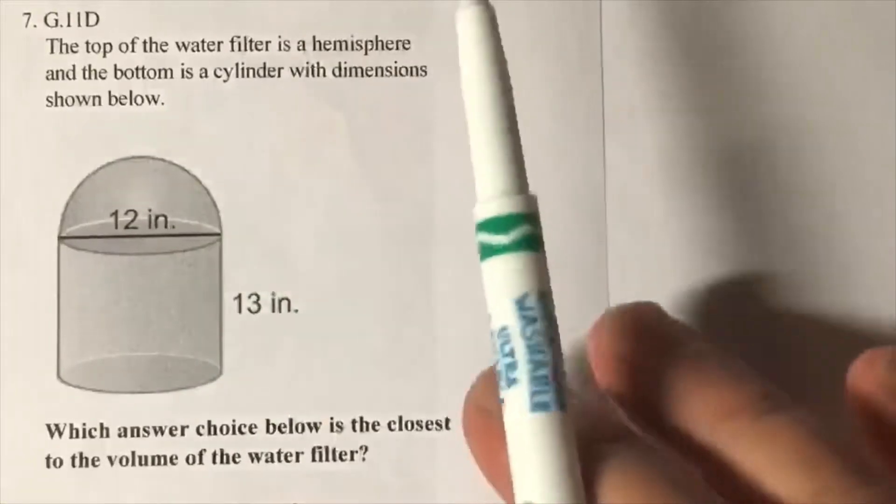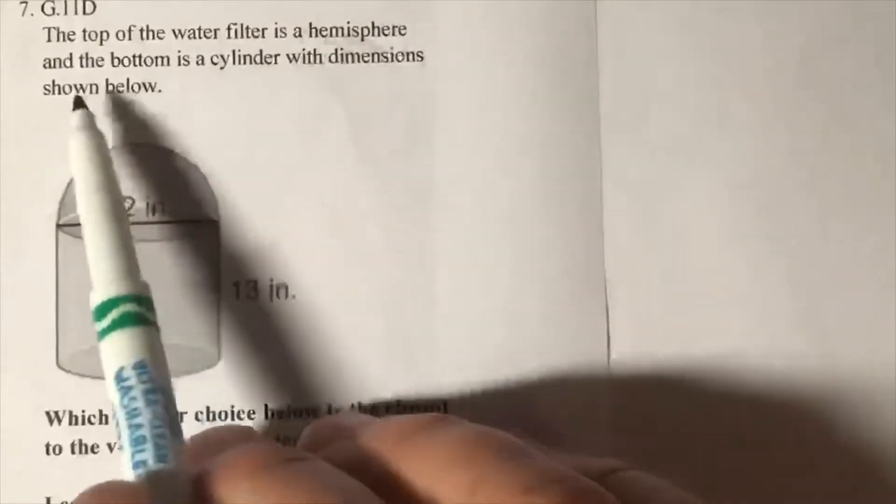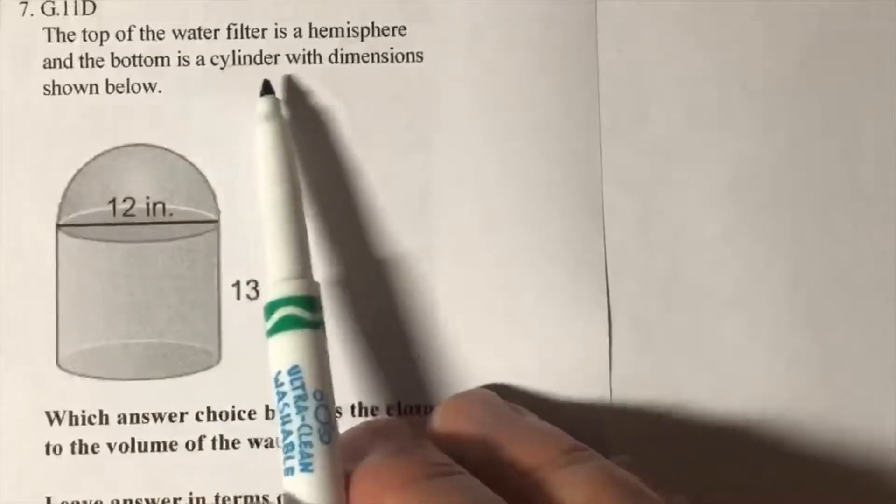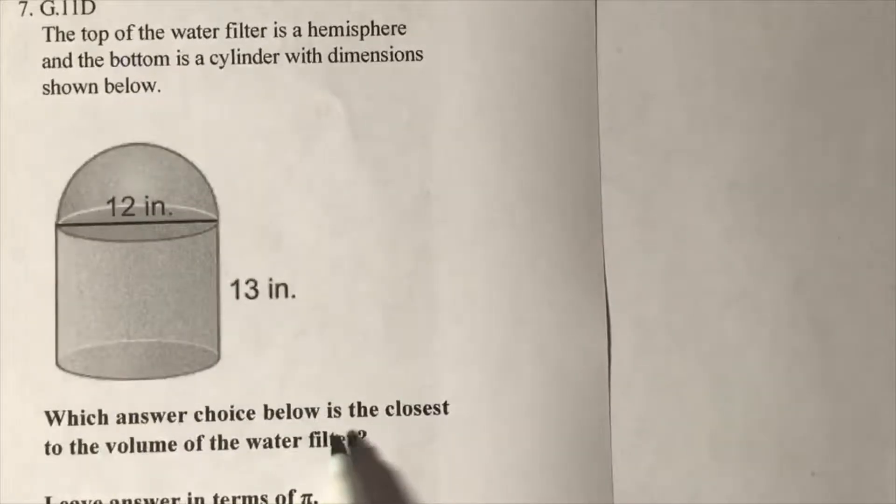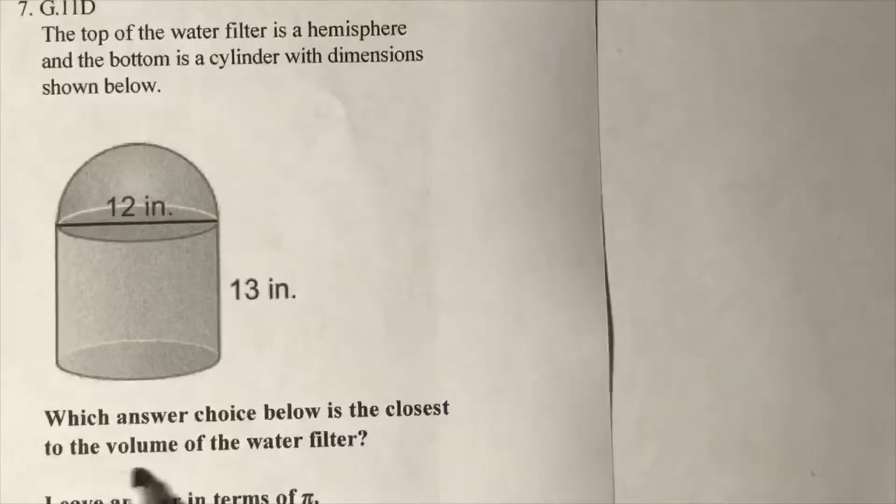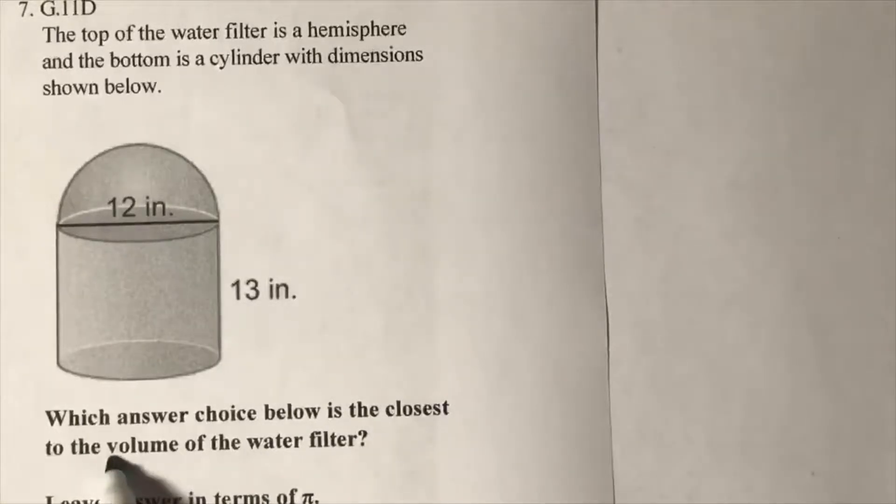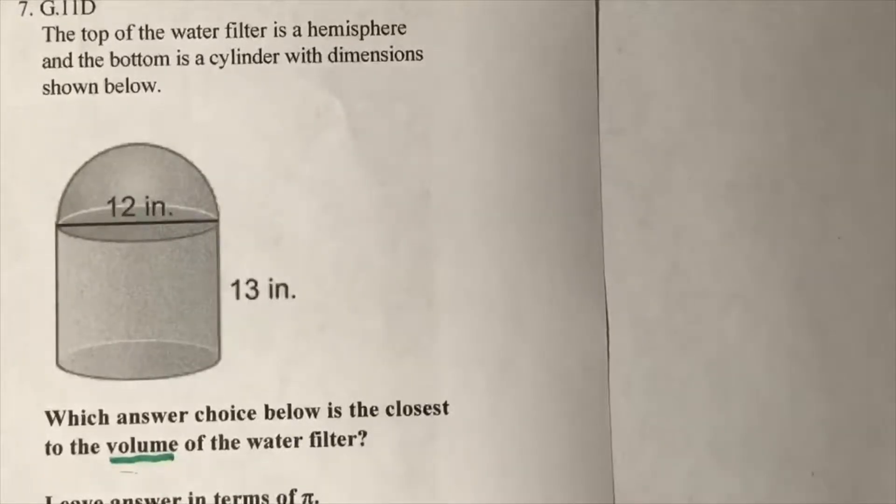The top of the water filter is a hemisphere and the bottom is a cylinder with dimensions shown below. Which answer choice below is the closest to the volume of the water filter? Here's an important instruction: leave the answer in terms of pi.